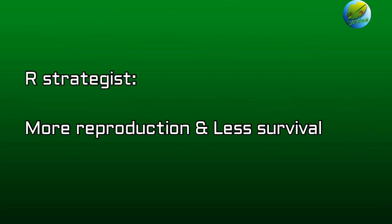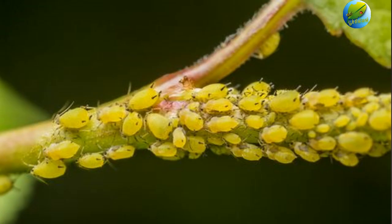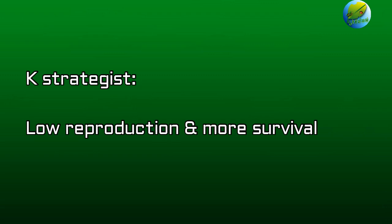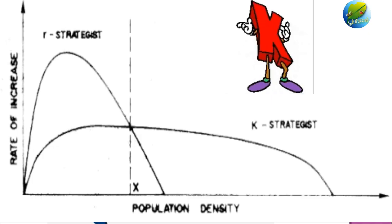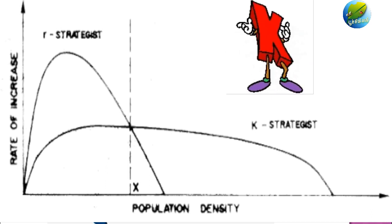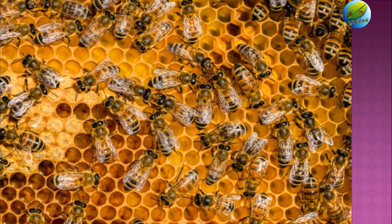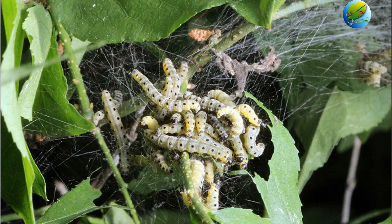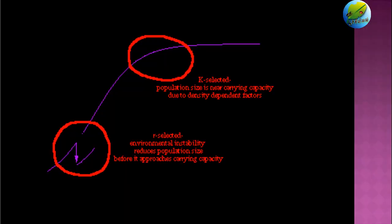An example of R-strategists is aphids. The other group is called K-strategists, which reproduce slowly but effectively compete for environmental resources, so their survival rate is higher — the K-letter denotes the flattened portion of the growth curve. Examples are honey bees and the codling moth of apple, which have low reproductive potential but a high survival rate for their young ones.